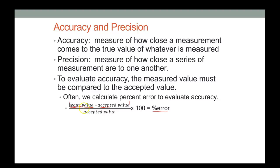The sign only tells you whether your value is too small or too large. You divide the difference by the accepted value and multiply by 100 to get a percent. For percent error, the sign doesn't matter.